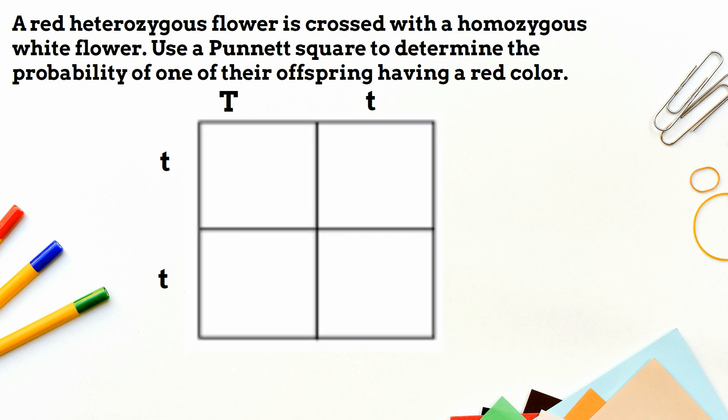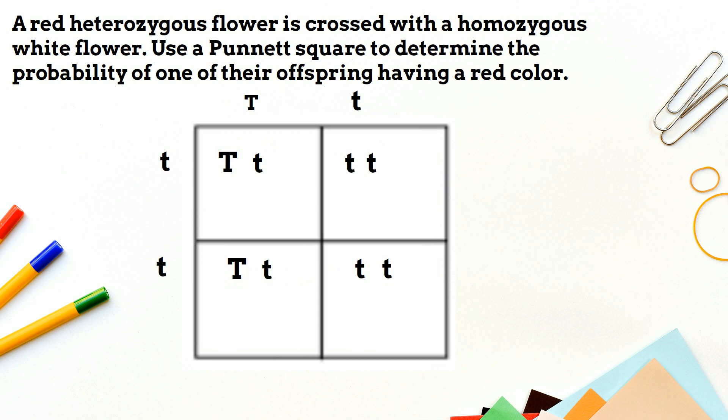I'm going to fill in the boxes. Now let's see what the chances are a trait will appear. Anytime you see a capital letter, this trait will appear. And recessive traits only appear when you see two lowercase letters.